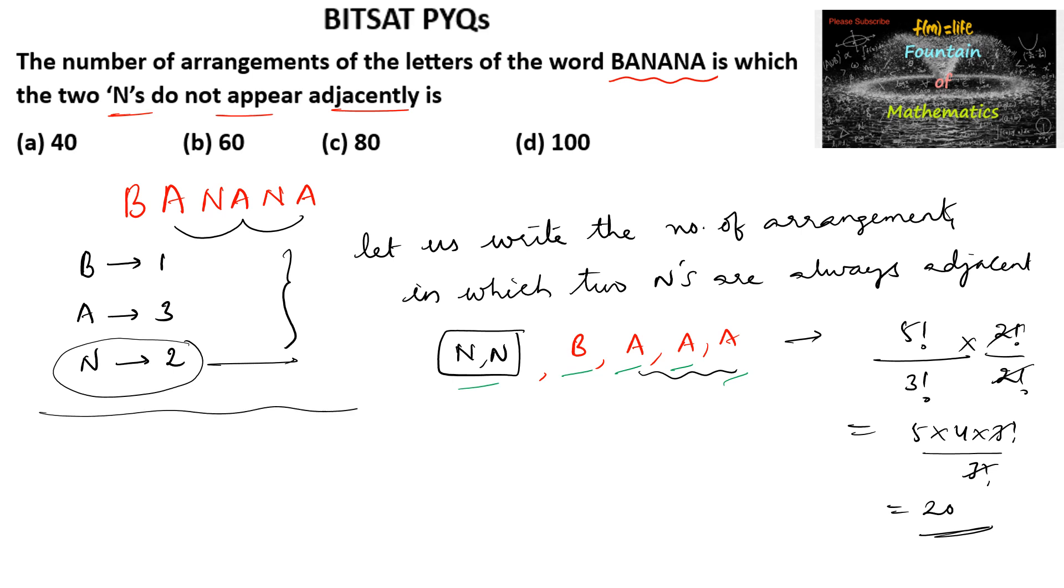Without any condition, the total number of arrangements can be given as: total 6 letters are there, so 6 factorial upon 3 factorial times 2 factorial. That's 6 times 5 times 4 times 3 factorial divided by 3 factorial times 2 factorial. 3 factorial gets cancelled, 2 factorial is 2, so we get 5 times 2 times 10 equals 60.